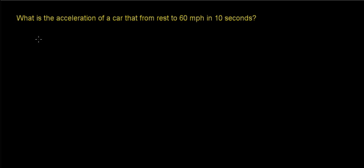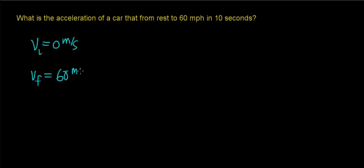Let's summarize some of the information contained in this problem. The initial velocity of this car is going to be 0 meters per second — that's what it means for an object to start from rest. The final velocity is going to be 60 miles per hour, and we're going to need to convert this unit over to meters per second. The time it takes to change that velocity is going to be 10 seconds.